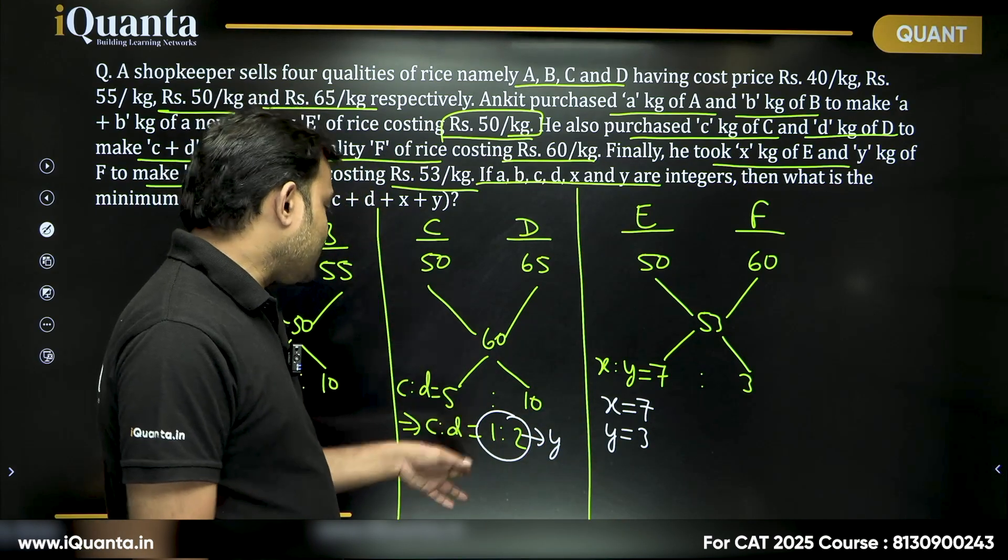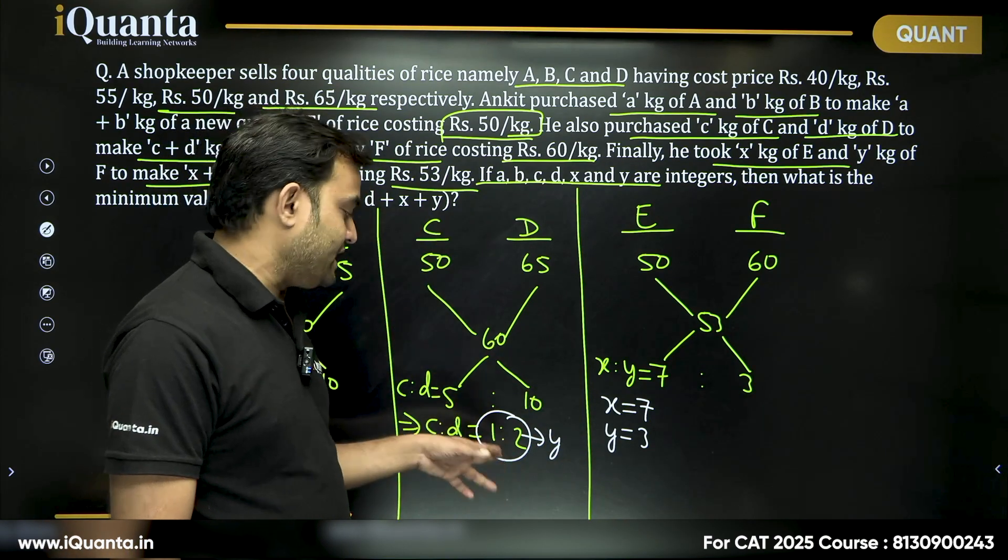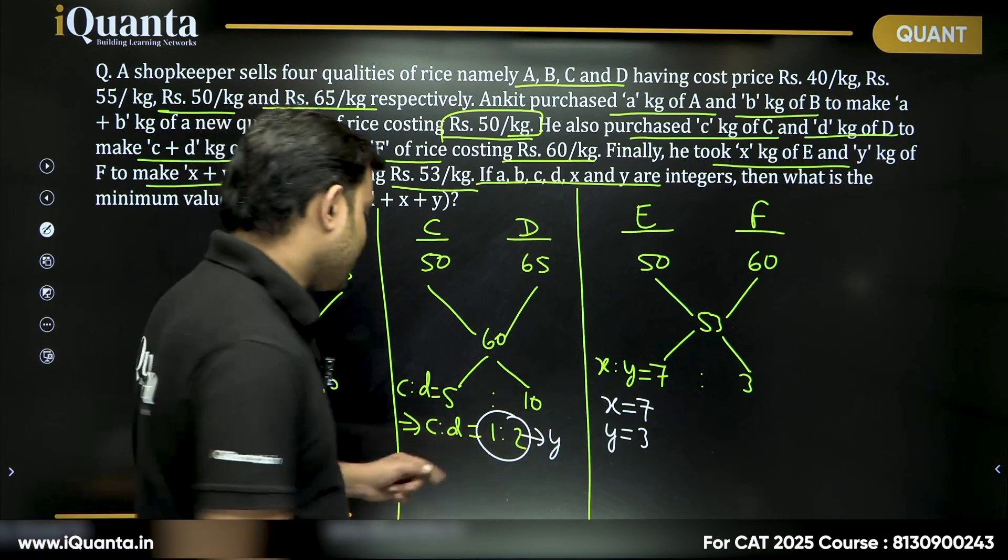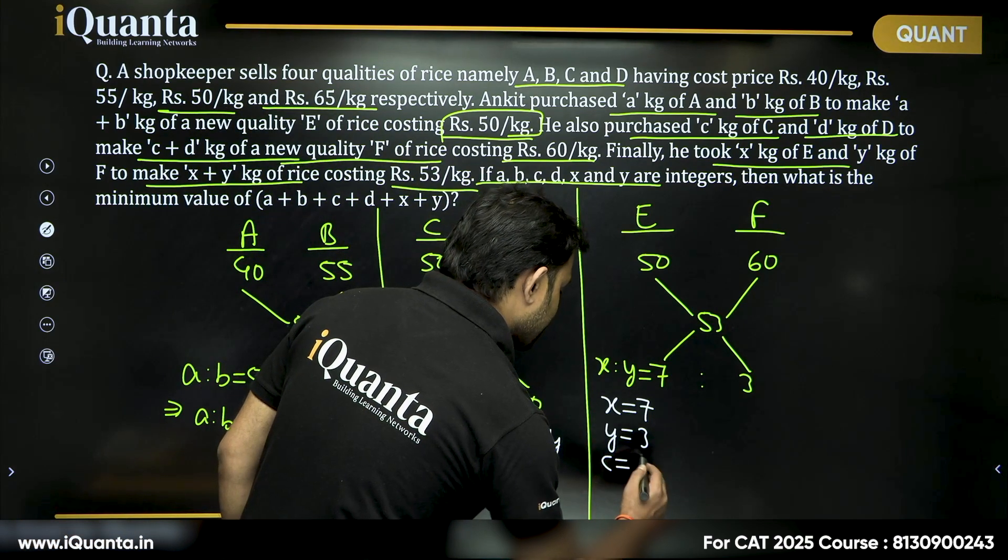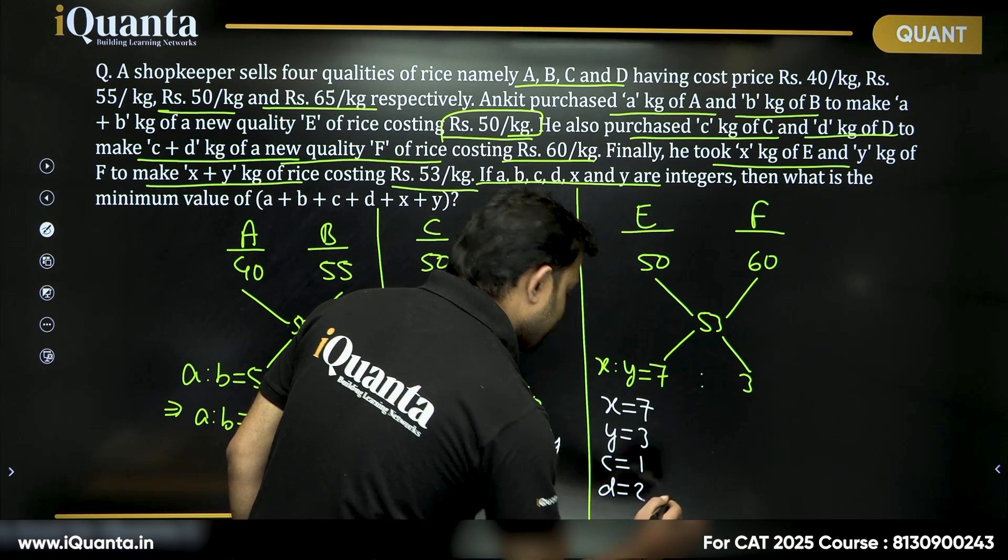If I take 1 kg of C and 2 kg of D, I am getting 3 kg. So, I can say minimum value of C, I can take 1. Minimum value of D, I can take is 2. It works.